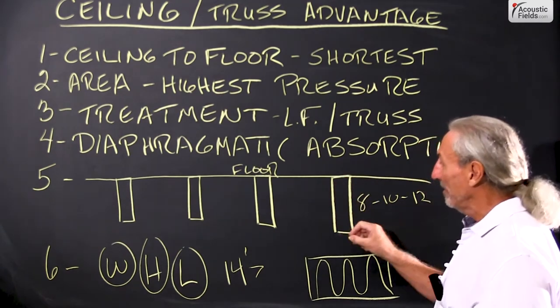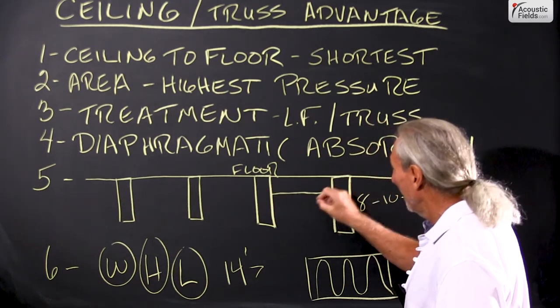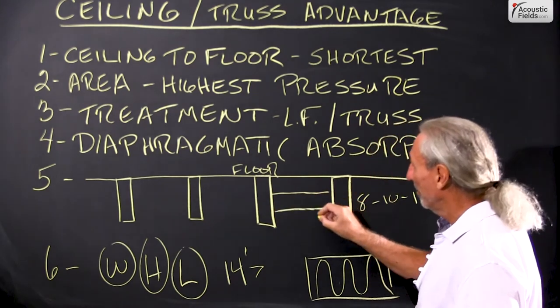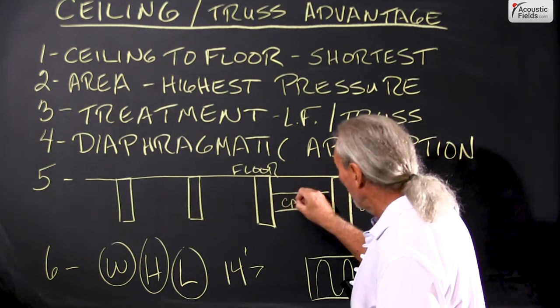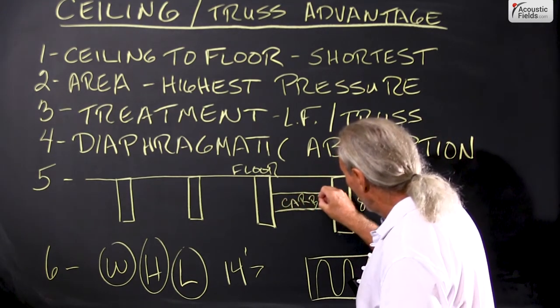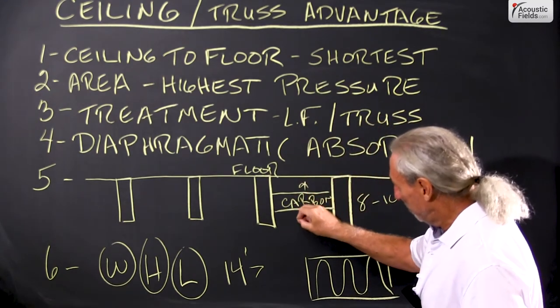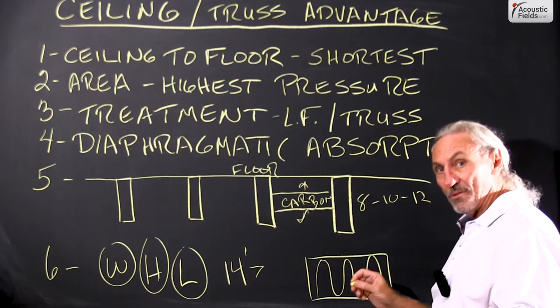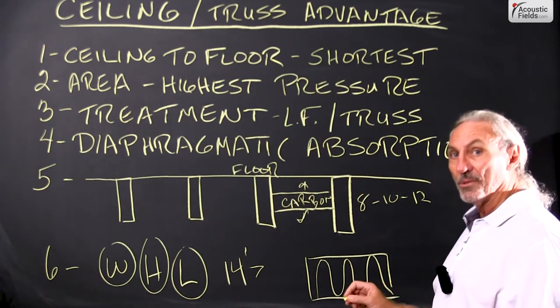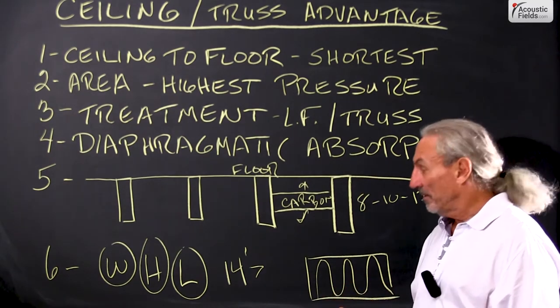So we have a nice cavity to work with and we can simply create a diaphragmatic absorber here and we use our carbon technology here and by adjusting the depth of the cavity we can tune the absorber to the frequency response we need for that position in the room.